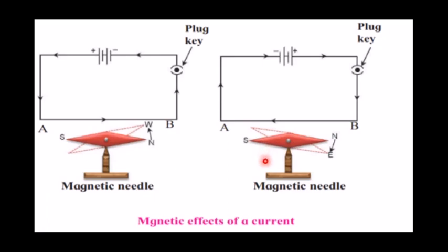From this experiment we came to know that the magnetic effect is observed because of the current in the wire. This experiment was done by Hans Christian Oersted. He showed that when a current passes through a metal wire, the magnetic needle near the wire turns through a certain angle. By this we came to know that there is a definite relation between electricity and magnetism.